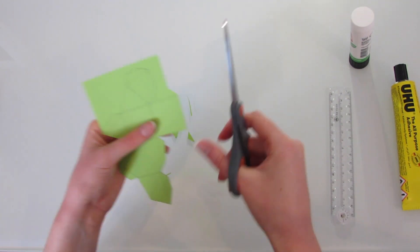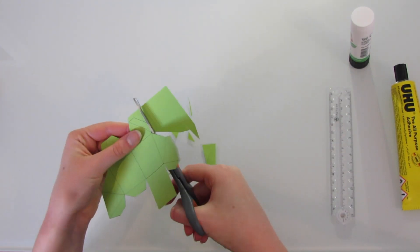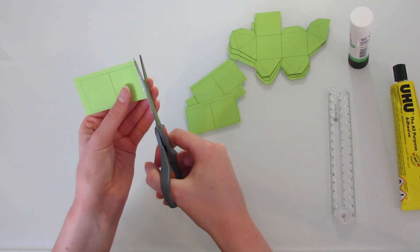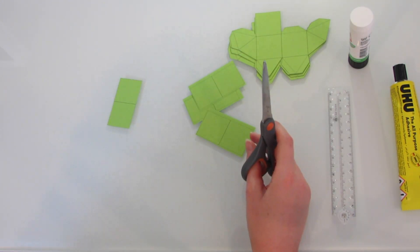We also need to cut out the domino-shaped joining pieces, which we will use later. Note that each one is two squares joined together along a side. You don't want to cut down the middle.